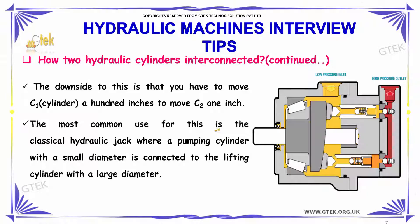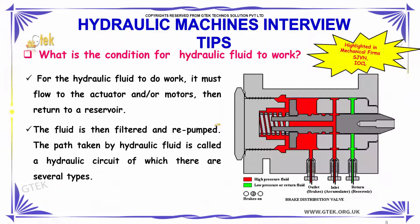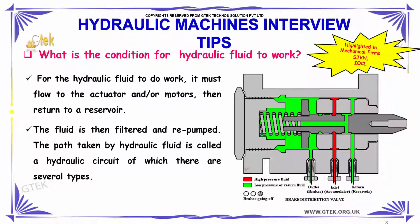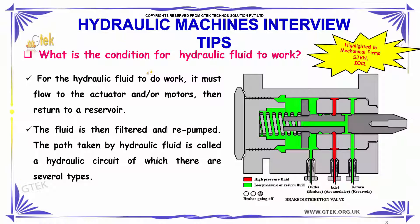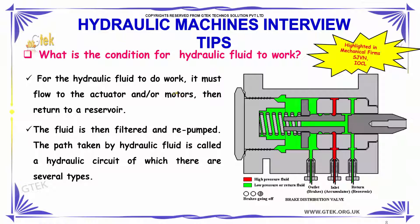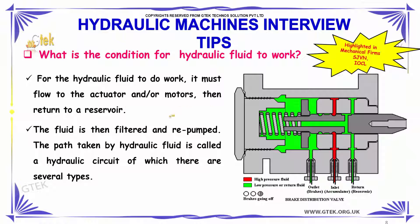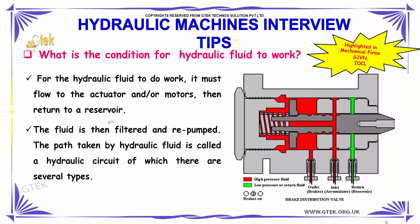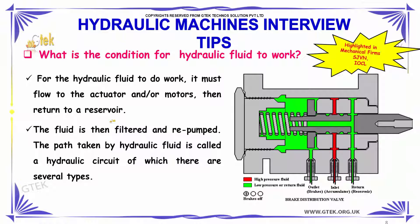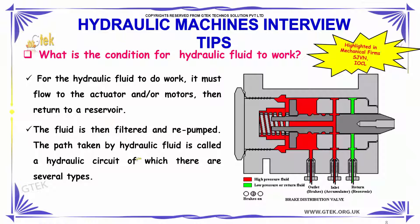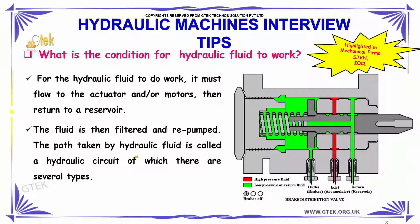What is the condition for hydraulic fluid to work? For hydraulic fluid to do work, it must flow to the actuator or motor, then return to a reservoir. The fluid is then filtered and repumped. The path taken by the hydraulic fluid is called a hydraulic circuit, of which there are several types.